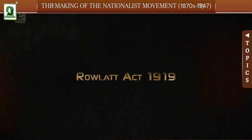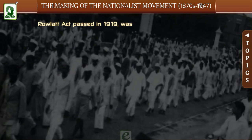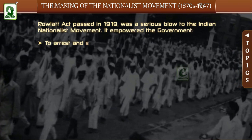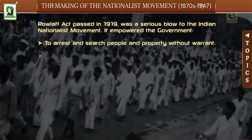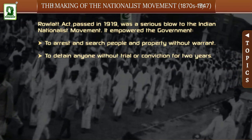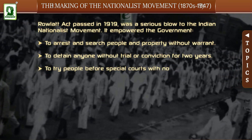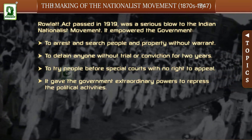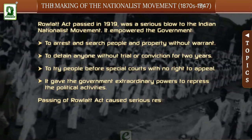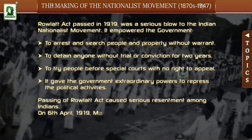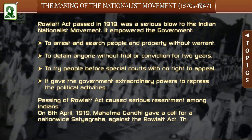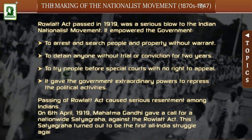Rowlatt Act, 1919: The Rowlatt Act passed in 1919 was a serious blow to the Indian Nationalist movement. It empowered the government to arrest and search people and property without warrant, to detain anyone without trial or conviction for two years, and to try people before special courts with no right to appeal. It gave the government extraordinary powers to repress political activities. On 6th April 1919, Mahatma Gandhi gave a call for a nationwide Satyagraha against the Rowlatt Act, which turned out to be the first all-India struggle against the British government.